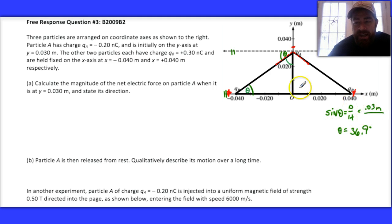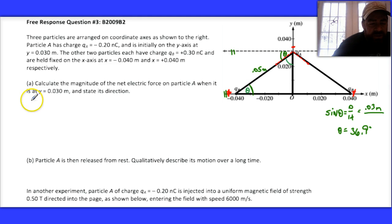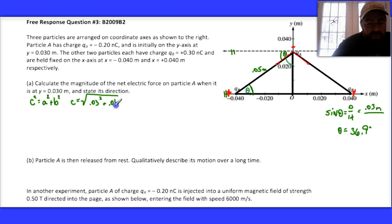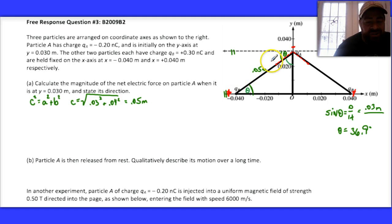I've done the work ahead of time. I ended up using the hypotenuse, which is going to be 0.05 meters, found using the Pythagorean theorem. So c² = a² + b², where c is the hypotenuse — the distance between the two particles — which is the square root of 0.03² + 0.04² = 0.05 meters. I wouldn't have done that if I didn't ultimately need that distance d separating the particles, which is a Coulomb's Law distance. That's where the 36.9 degrees comes from.